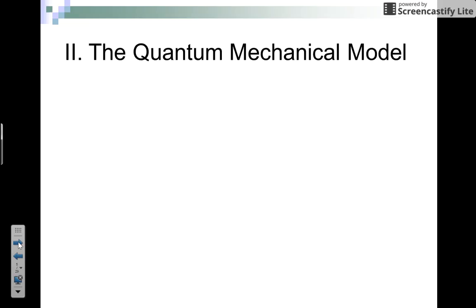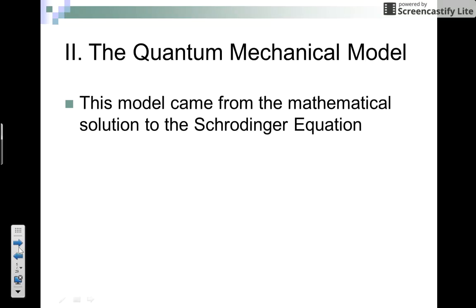This leads us to our modern day theory of atoms called the quantum mechanical model. This model is the only model that comes from a mathematical solution to an equation known as the Schrodinger equation.